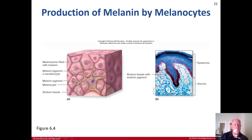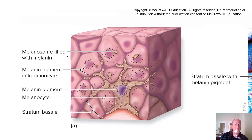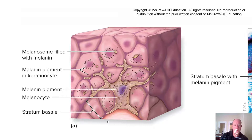Looking more closely at melanin and melanocytes: we can see a melanosome filled with melanin, melanin pigment in the keratinocyte, and the melanocyte itself with branches extending out. This is shown at the stratum basale, just above the dermis layer — the deepest layer of our epidermis.